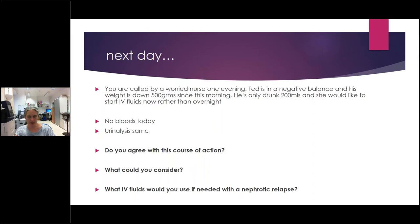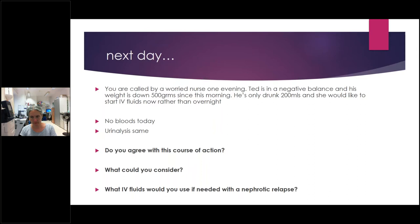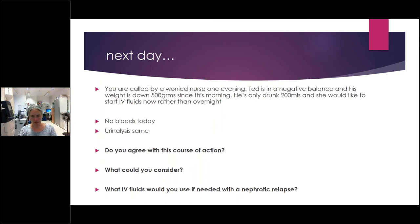If IV fluids are needed for a nephrotic child in relapse, be cautious with saline. You could use 4.5% albumin as IV fluids — that is fine. Glucose should be used with caution in someone on high-dose steroids. Always try oral fluids first. Be aware of what fluids you're using and how much salt you're giving.